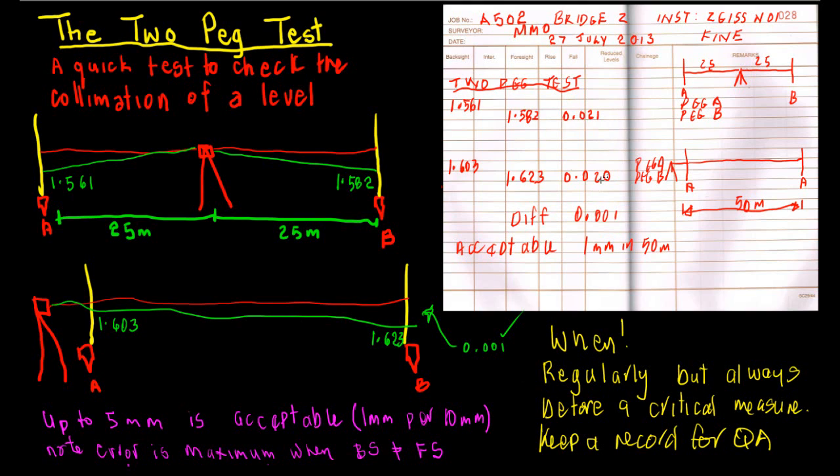Now we can see straight away that there's a millimeter difference - a millimeter more fall in the first one than in the second one. This suggests a difference of a millimeter, which is pretty good because usually with our staff we're estimating to a millimeter, so that's a fairly reasonable indication that the level is okay.